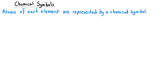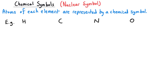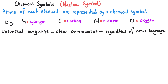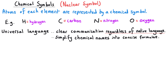The atoms of each element are represented by a chemical symbol, sometimes also called a nuclear symbol. For instance, we have capital H for hydrogen, C for carbon, N for nitrogen, and O for oxygen. Chemical symbols are crucial because they provide a universal language for scientists, enabling clear communication about elements and compounds regardless of the speaker's native language. They also simplify complex information — turning lengthy chemical names into concise symbols, which is especially useful in chemical equations.